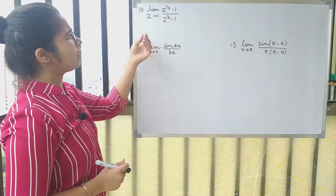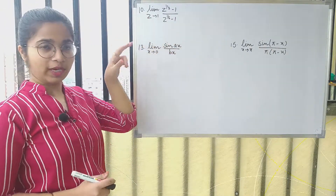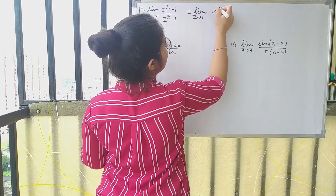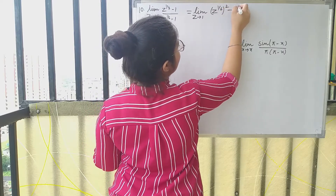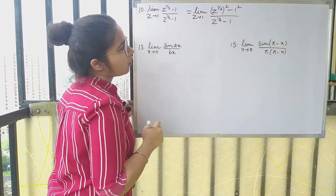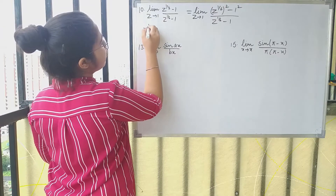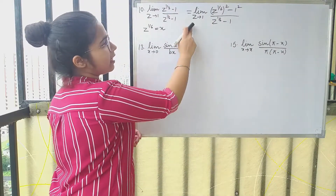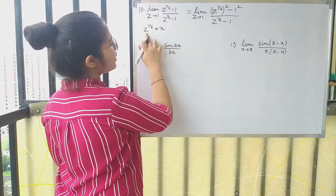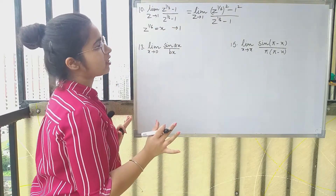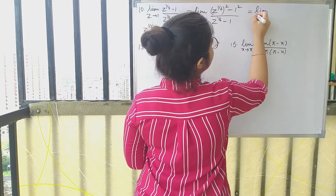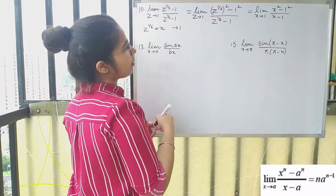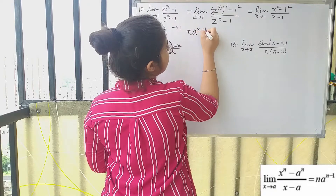Moving on to the 10th question, we have to find the limit of this function as z tends to 1. We can rewrite the numerator as (z^(1/6))² − 1² over (z^(1/6) − 1). If we take x = z^(1/6), then as z tends to 1, z^(1/6) also tends to 1. So this becomes the form (x² − a²)/(x − a) as x tends to a, which we recognize as the standard limit formula.